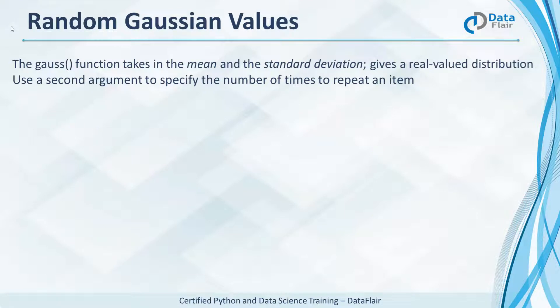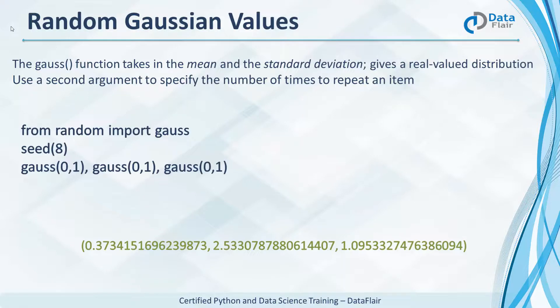We also have the gauss function. This provides a real value distribution by operating on the mean and the standard deviation. We can use the second argument to declare how often to repeat an item. We set the seed to 8 and print 3 Gaussian values.